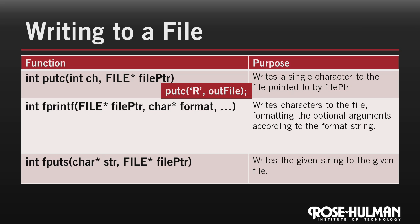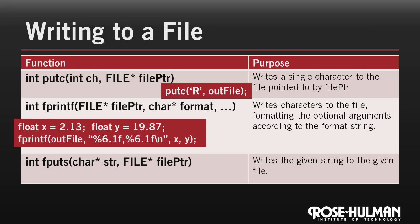fprintf should look familiar — it's almost exactly like printf. Here's an example. This example declares and initializes two float variables, x and y. Then it asks fprintf to add a line to the file, formatting both x and y to use six spaces with one digit after the decimal point. So this example would add text like this to the end of the file.